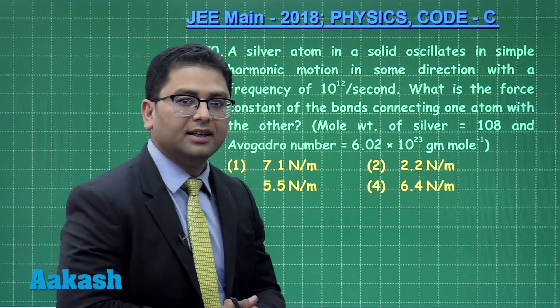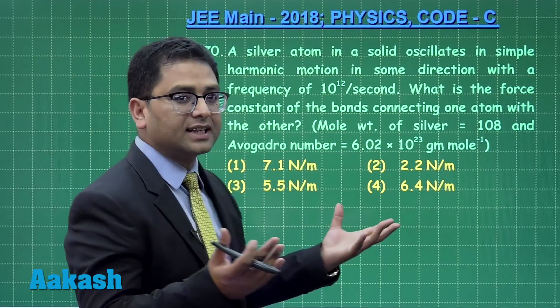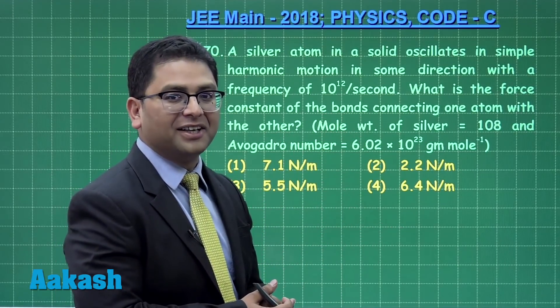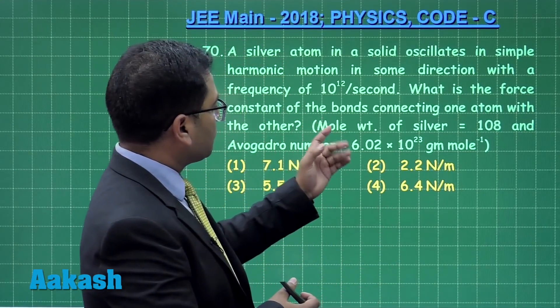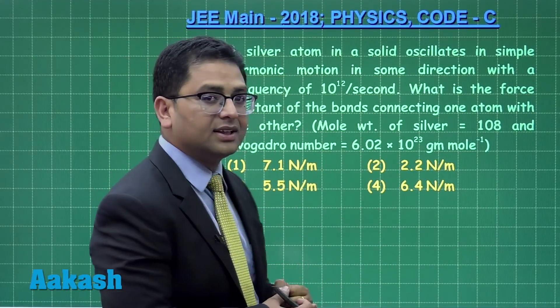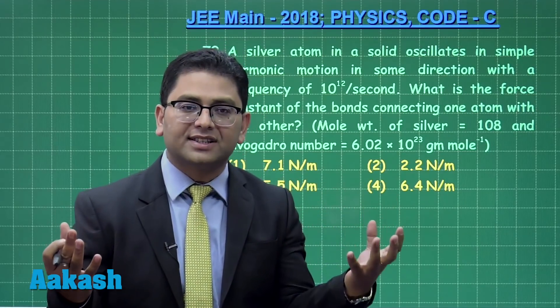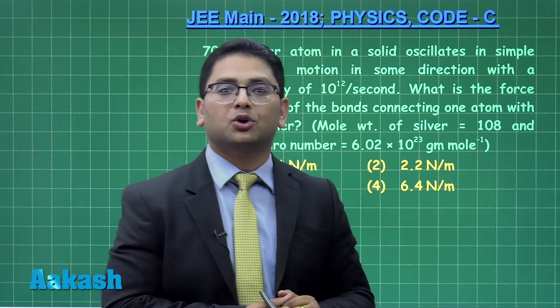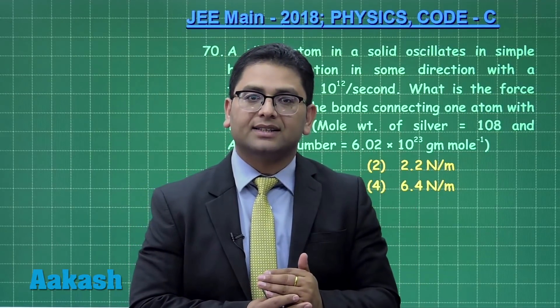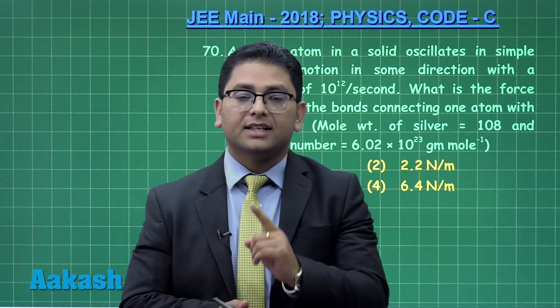You require a small basic knowledge of chemistry. A silver atom is oscillating with this much frequency. Once the frequency is known, the time period is the reciprocal of that. What is the force constant of the bonds connecting one atom with the other?